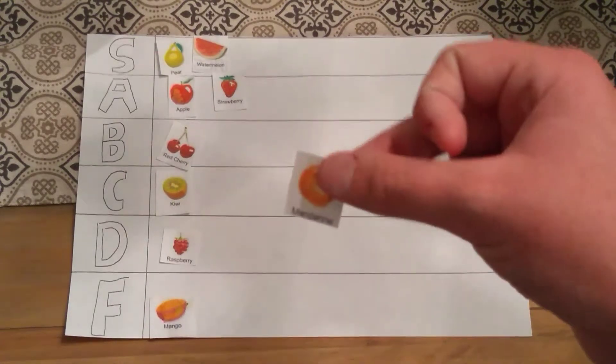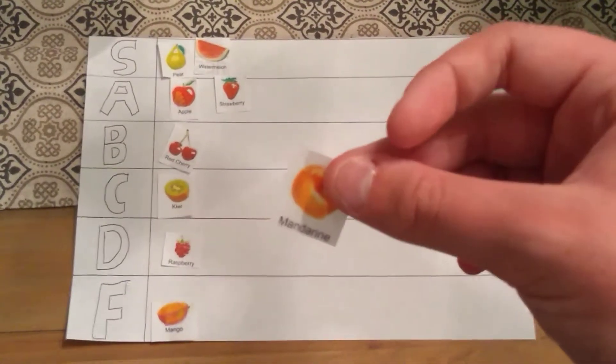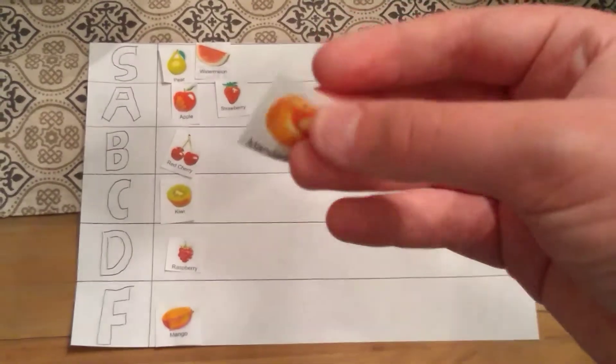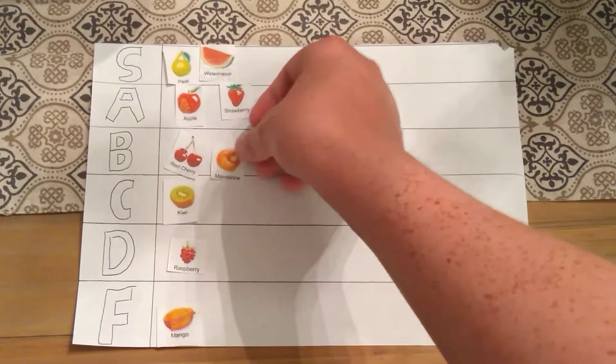Next up, we got mandarins. Which I've had in the past before. And they're basically just smaller oranges. So I actually can't really eat an entire orange. So we're going to be putting that in the B tier.